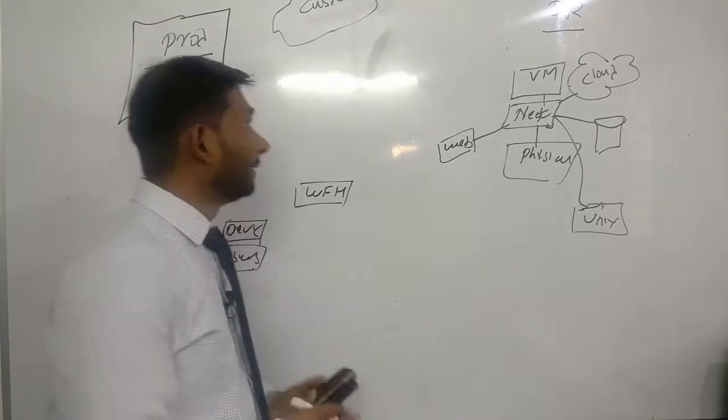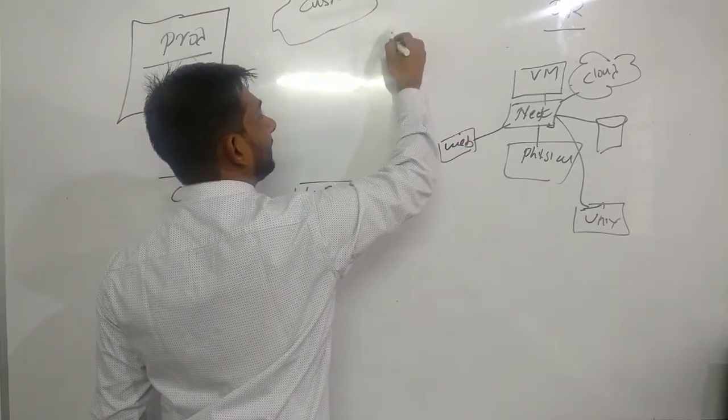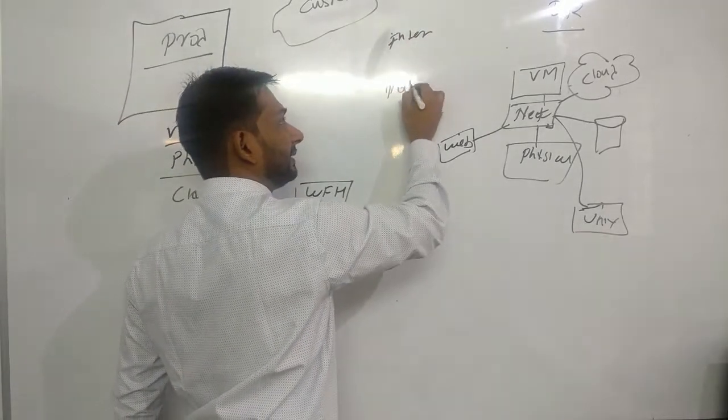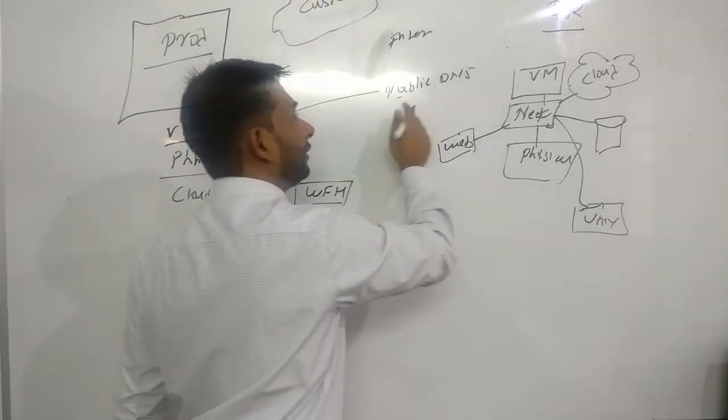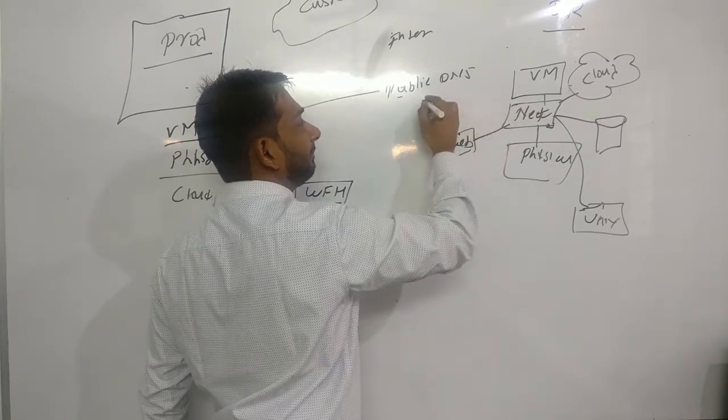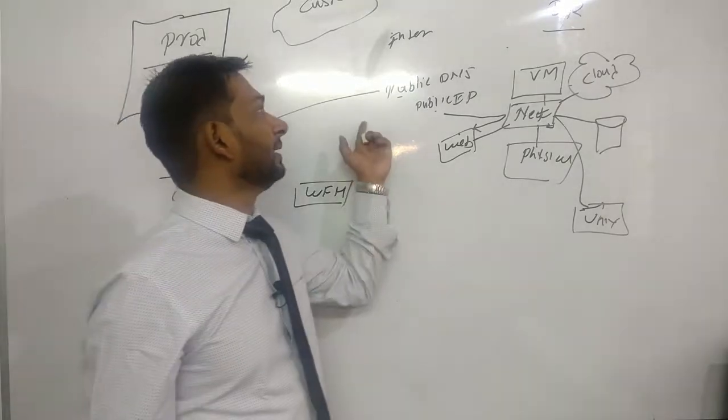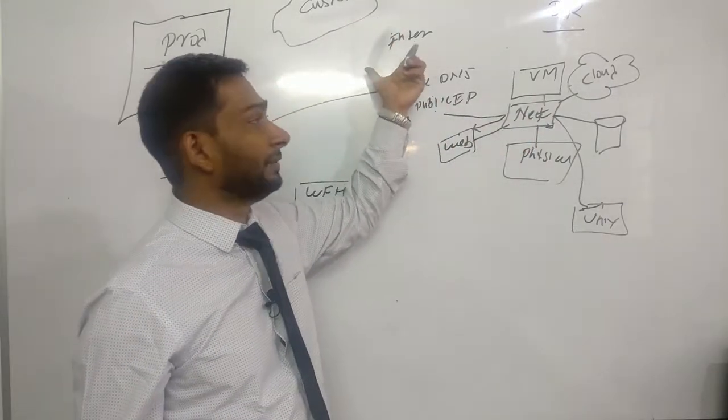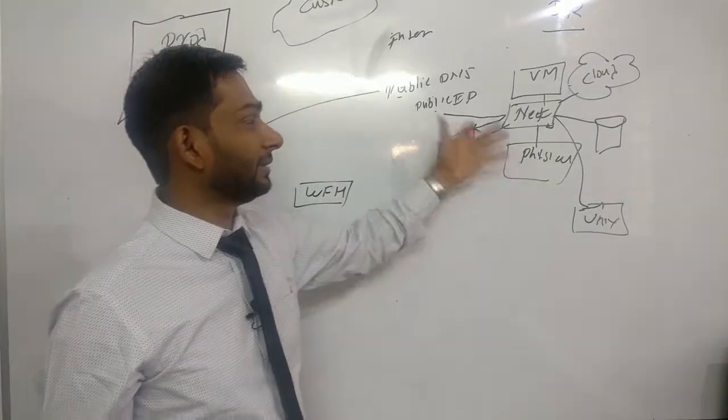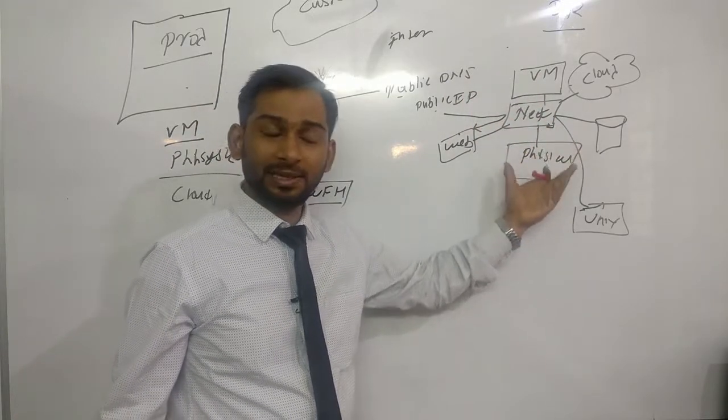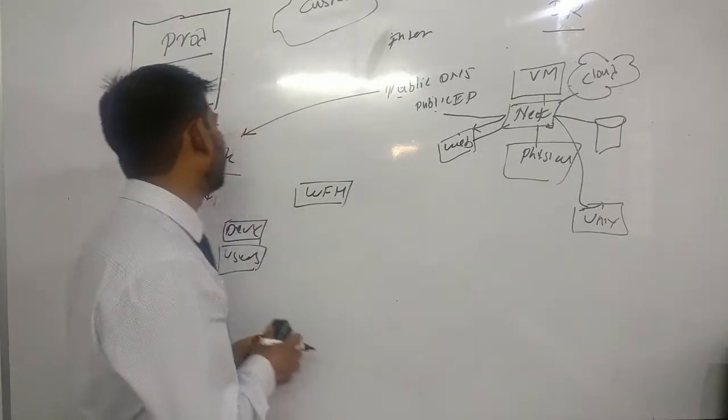Let's take this one by one. I have customers who will be accessing web servers via internet. I need to make sure my public DNS which was earlier pointing to my production web server now points to my DR public IP which is NATed to my web server. So whenever my customers try to access the web servers - for example, this organization has an online web store and customers want to use the web server to make a purchase.